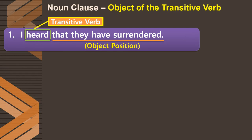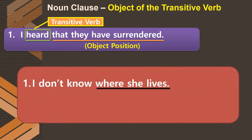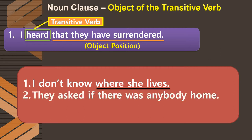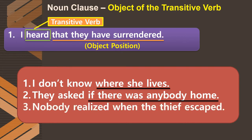Let's look at more examples of noun clauses as object of the transitive verb. First: 'I don't know where she lives' — 'where she lives' is the object of the transitive verb 'know.' Second: 'They asked if there was anybody home' — 'if there was anybody home' is the object of the transitive verb 'asked.' Third: 'Nobody realized when the thief escaped' — 'when the thief escaped' is the object of the transitive verb 'realized.'